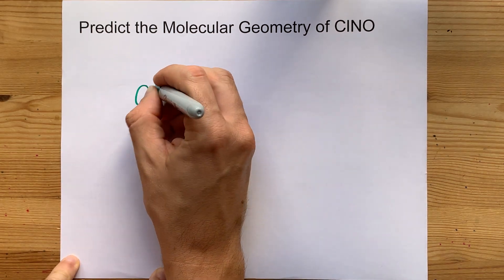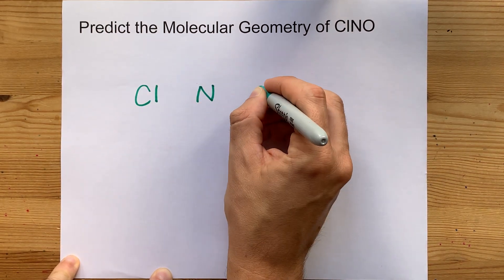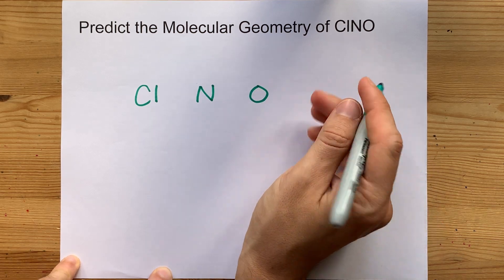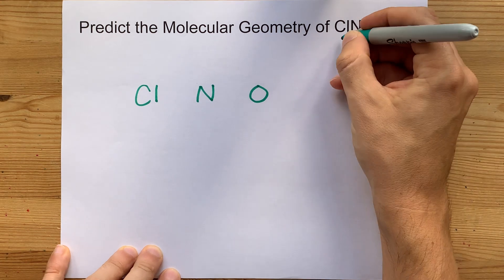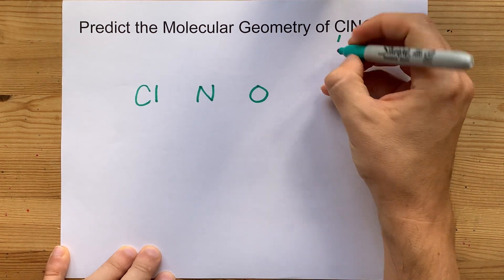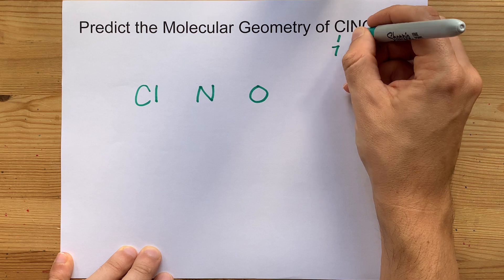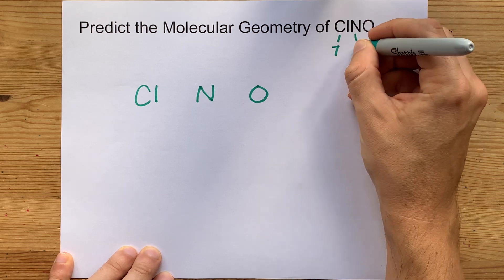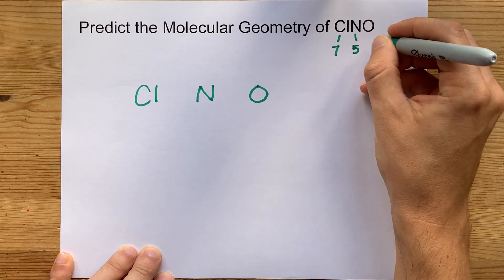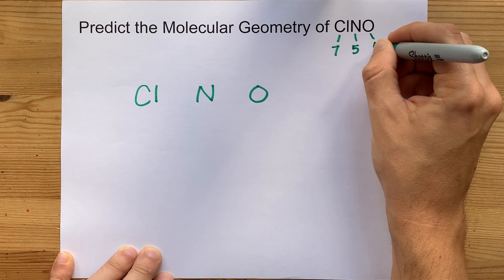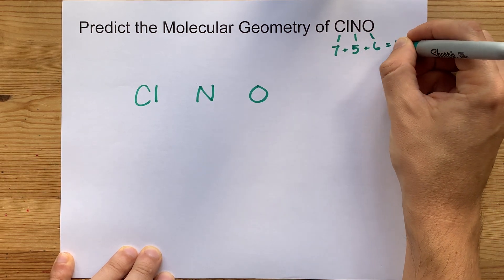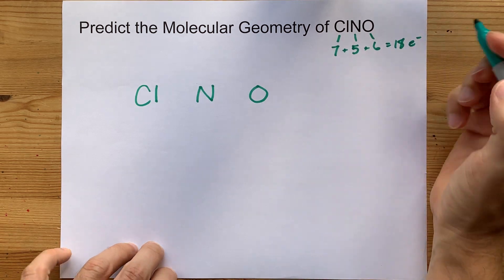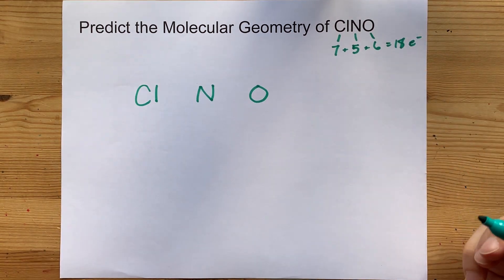I'm going to draw my Cl and my N and my O in a line, and I'm going to take a look at the valence electrons from each. Chlorine is in group 17, so it brings 7 valence electrons. Nitrogen in group 15 brings 5. Oxygen in group 16 brings 6. When you add all of those together, you end up with 18 valence electrons to be put down in your Lewis structure.